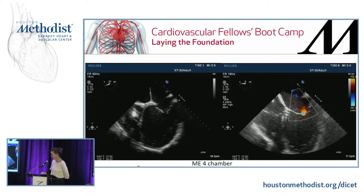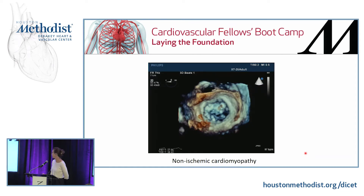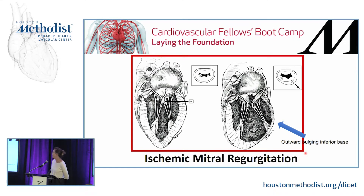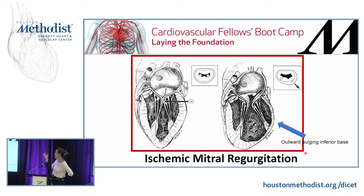This patient has non-ischemic dilated cardiomyopathy, and you can see that the leaflets don't even come together. This is a cause of ischemic mitral regurgitation — you can see the outward bulging of the inferior base of the left ventricle. On the 3D, the location of P3 and A3 is unable to coapt because this papillary muscle is being pulled out of its normal location.